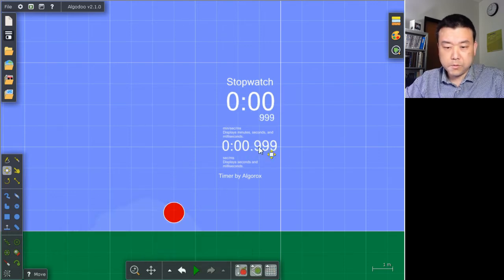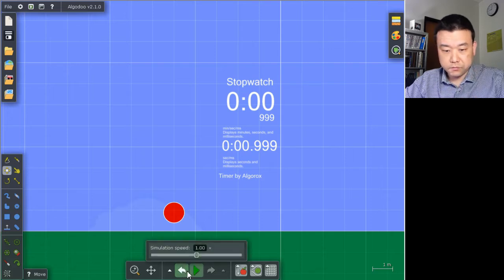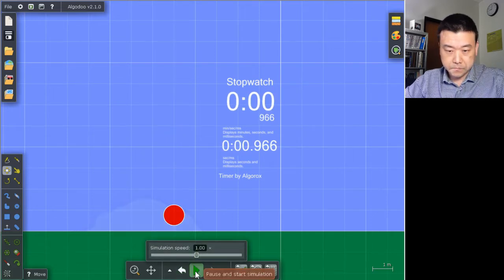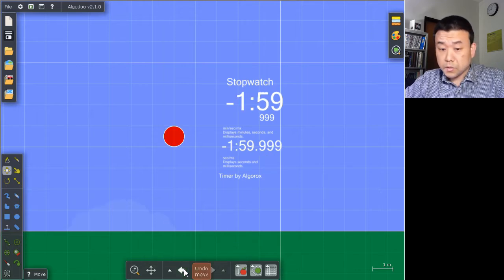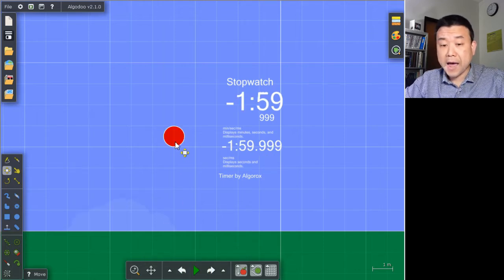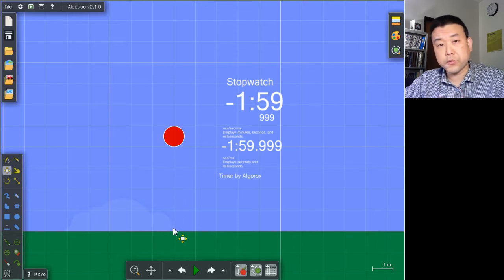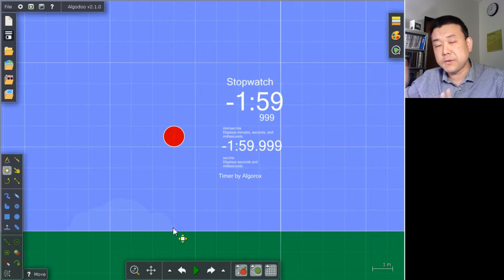Hmm, it's almost 1 second. Let me do it one more time. Yeah, almost 1 second. So for the ball to fall through half the height it fell through originally, it doesn't take half the amount of time. It takes a little bit more than half.